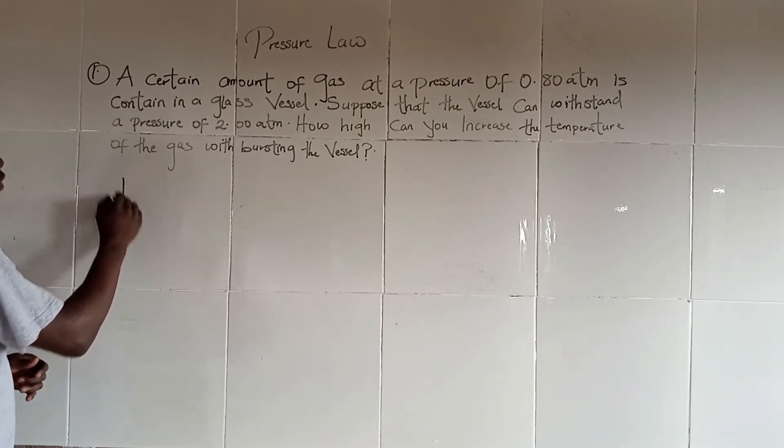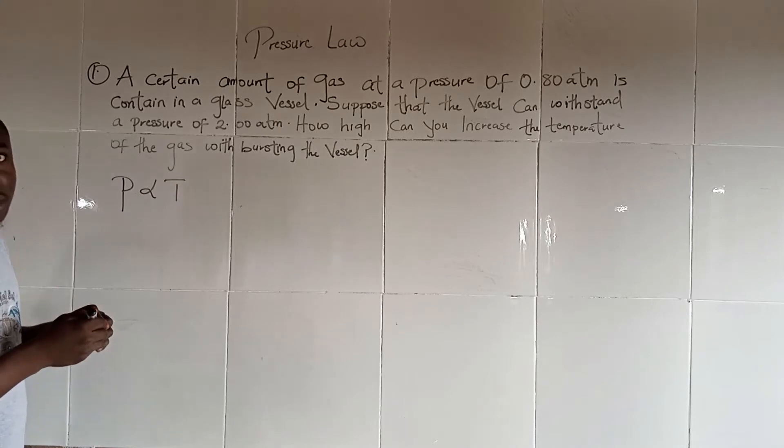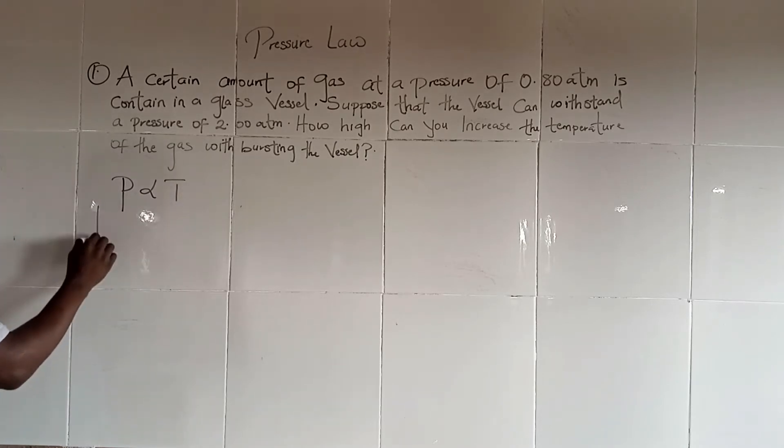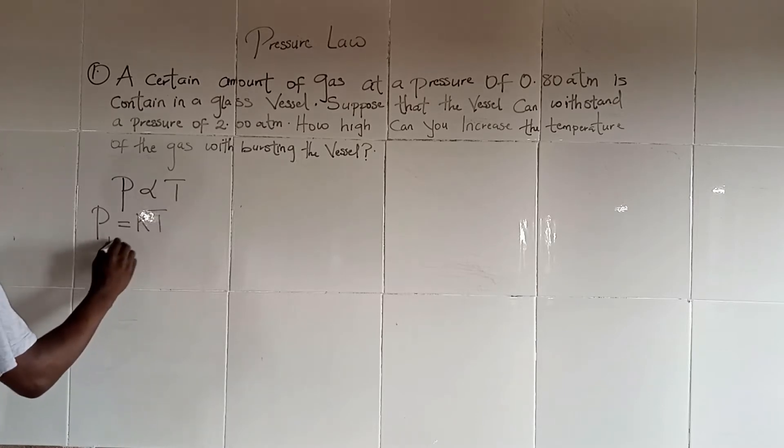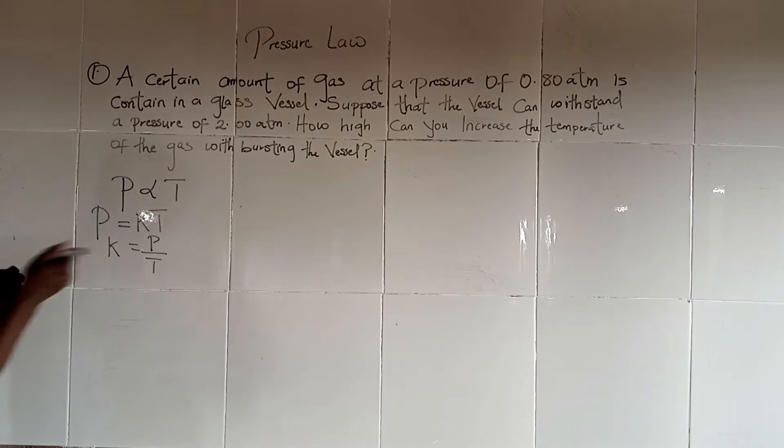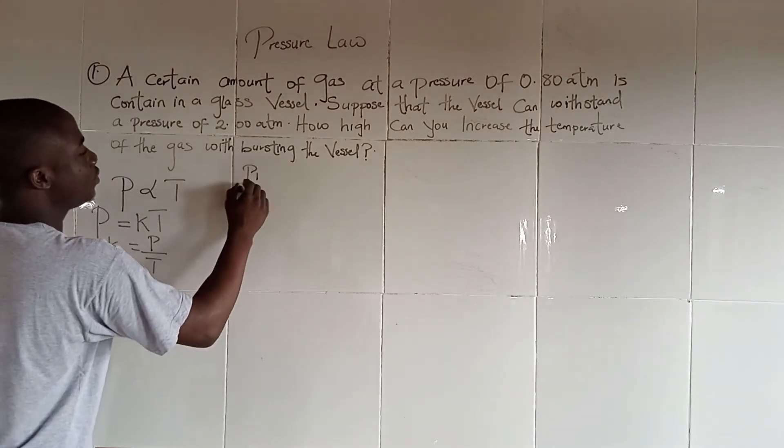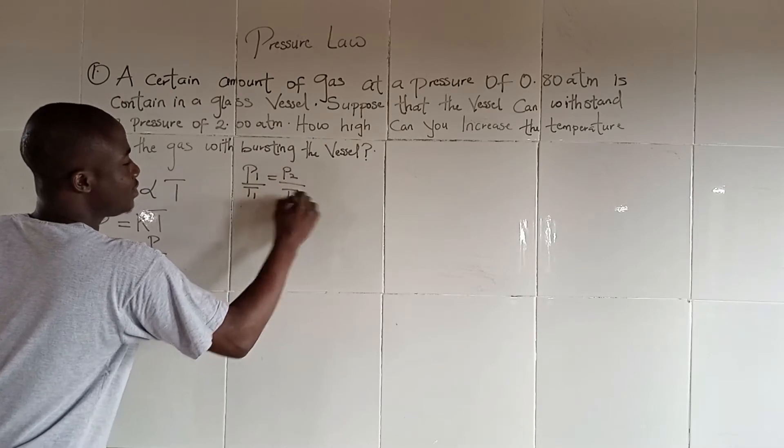Mathematically, the pressure law is given as pressure directly proportional to temperature. Mathematically P equals KT, whereby K equals P over T. It becomes P1 over T1 equals P2 over T2.